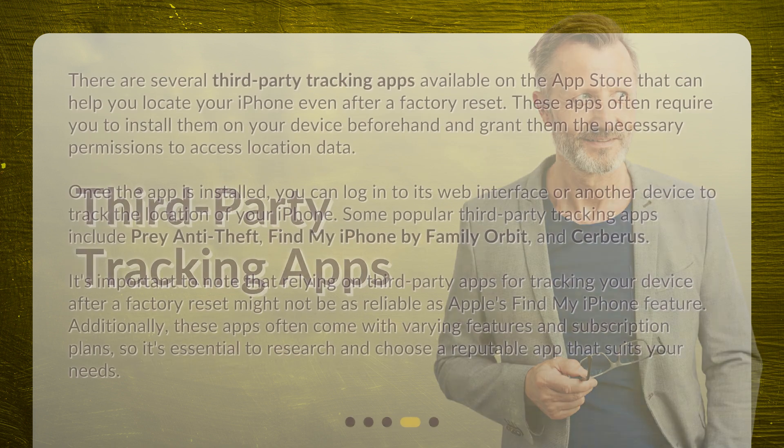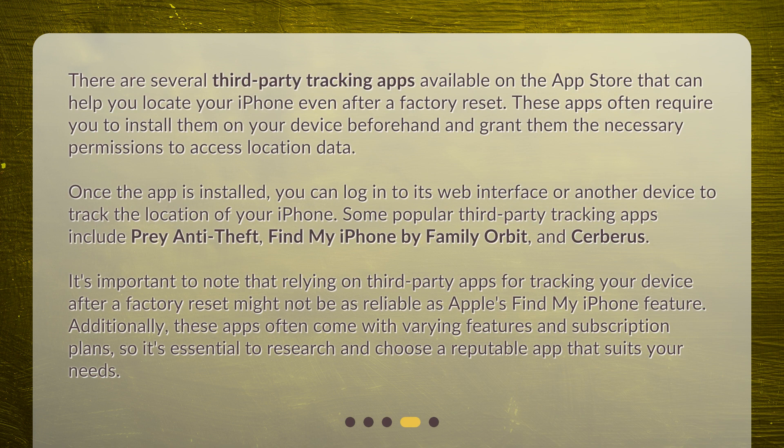There are several third-party tracking apps available on the App Store that can help you locate your iPhone even after a factory reset. These apps often require you to install them on your device beforehand and grant them the necessary permissions to access location data. Once the app is installed, you can log in to its web interface or another device to track the location of your iPhone. Some popular third-party tracking apps include Prey Anti-Theft, Find My iPhone by Family Orbit, and Cerberus. It's important to note that relying on third-party apps might not be as reliable as Apple's Find My iPhone feature, and these apps often come with varying features and subscription plans, so research and choose a reputable app that suits your needs.